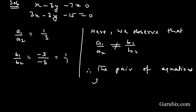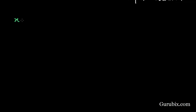Therefore, the pair of equations has a unique solution. Now we shall find the unique solution by using the cross multiplication method. For that, first of all, we shall write the given pair of linear equations in standard form.